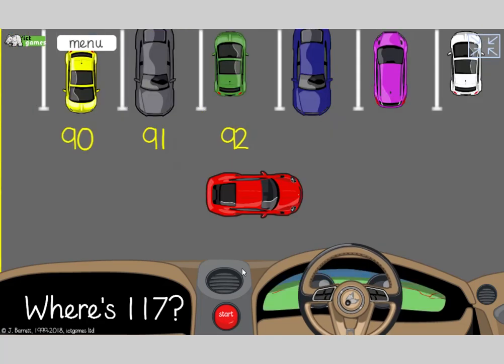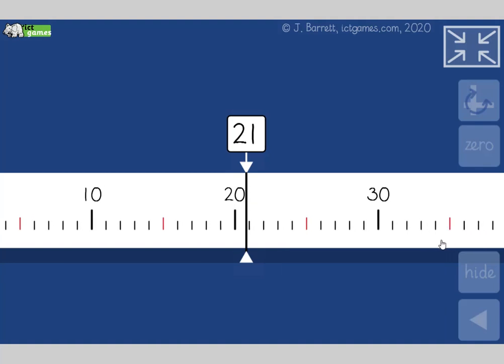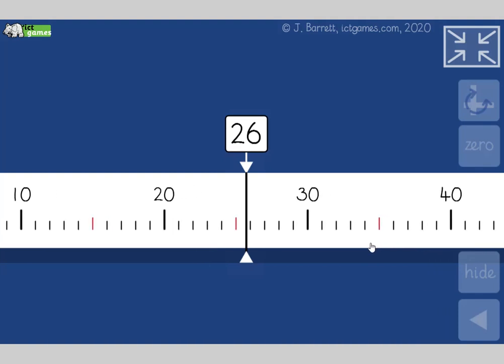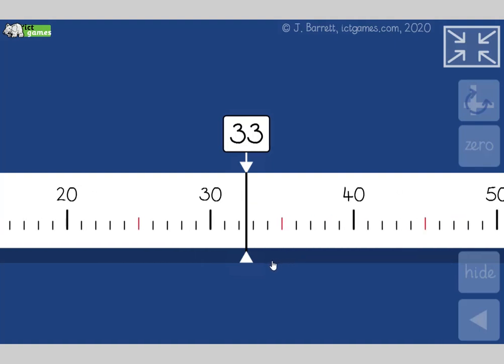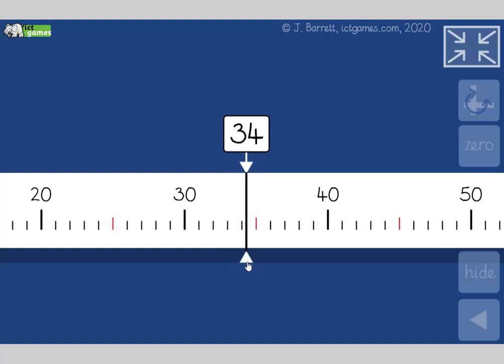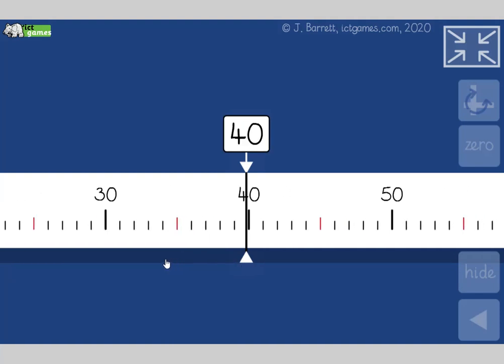I'll put that as a link underneath this video. Let's have a look at the next bit. Here we go, so we're starting at 20, we're counting on in ones. Off we go counting in ones: 20, 21, 22, 23, 24, 25, 26, 27, 28, 29, 30, 31, 32, 33, 34, 35, 36, 37, 38, 39, 40. I'm going to stop there.